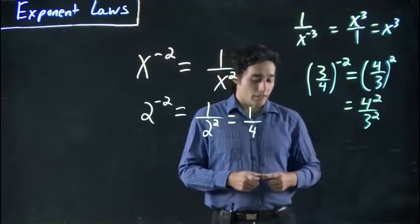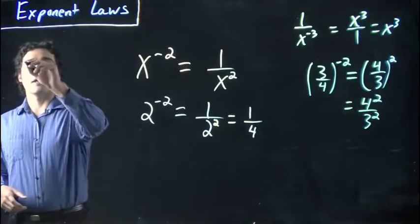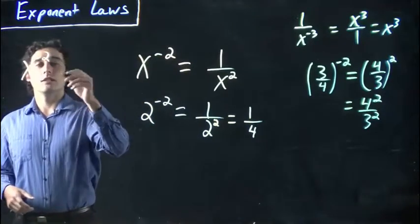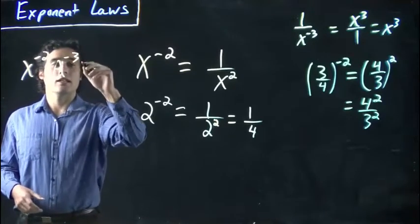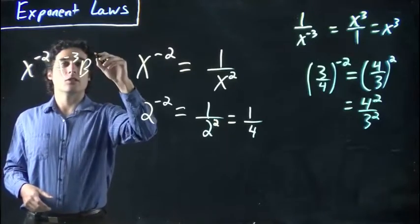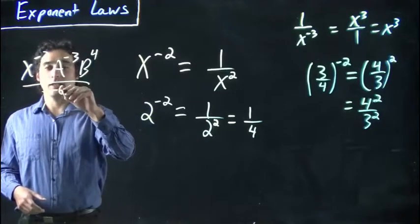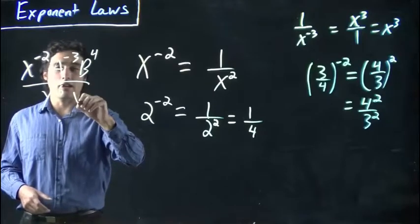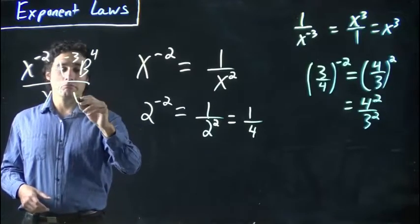And let's look at some complicated cases. Back over here. Let's say I had something like x to the negative 2, a to the negative 3, b to the 4, y to the negative 6, and let's go with t.